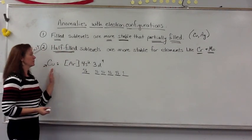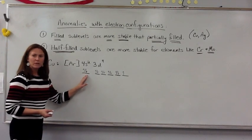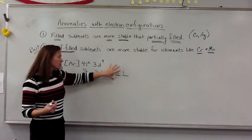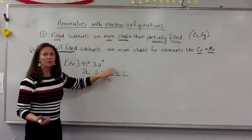If you look at copper, atomic number 29, argon, then 4s2, 3d9, there's only one unpaired electron in the higher energy orbital of the 3d sublevel.